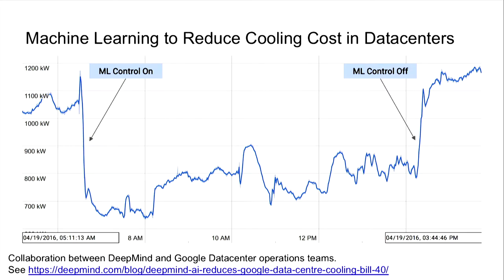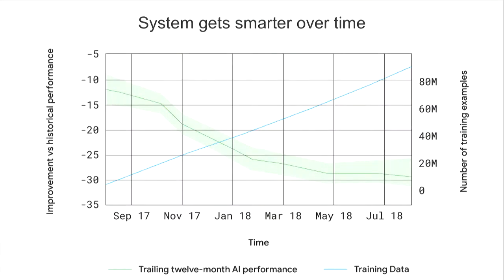Perhaps more importantly, as the system gets more data — operating over a period of about a year — it has seen the seasonal patterns and weather patterns and can get a better sense of how to make the system even more energy efficient. The more data we have, the better the improvement in energy efficiency. I think this is not just applicable to data centers, but to all sorts of building cooling and heating systems, which are a pretty significant component of overall energy usage.